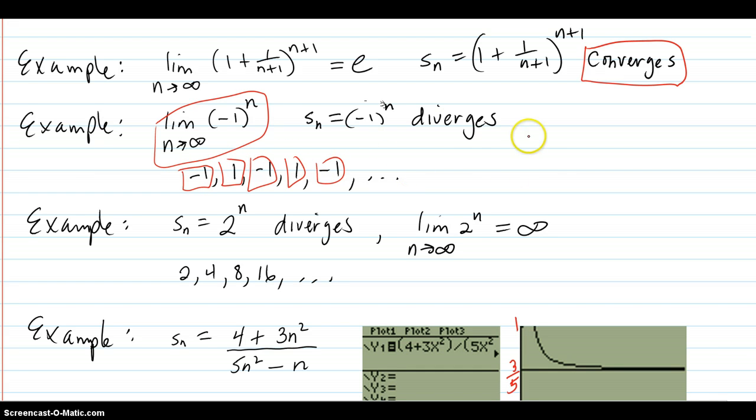They're just going to go back and forth. Here's negative 1, here's 1. They're going to go back and forth between negative 1, 1, negative 1, 1. So that's another way a sequence can diverge, not just going to infinity or negative infinity, but diverging because it just repeats between values.